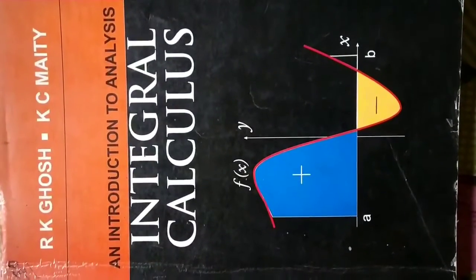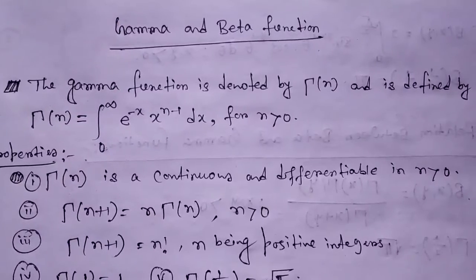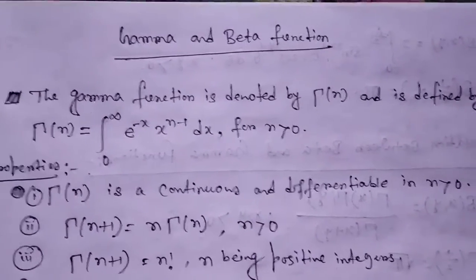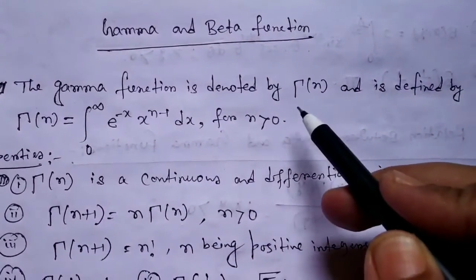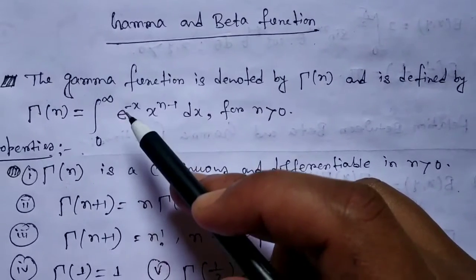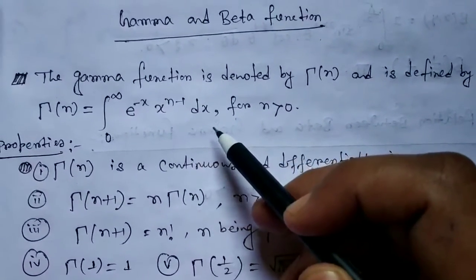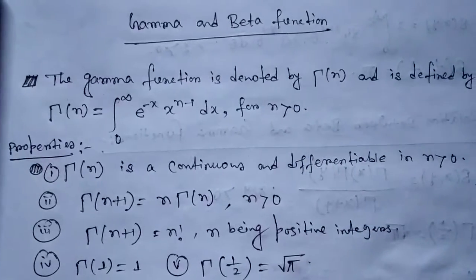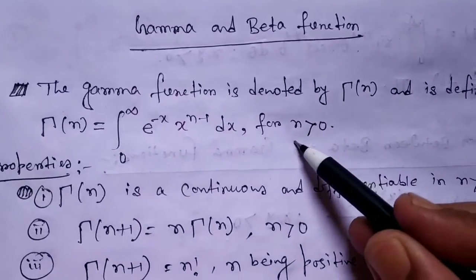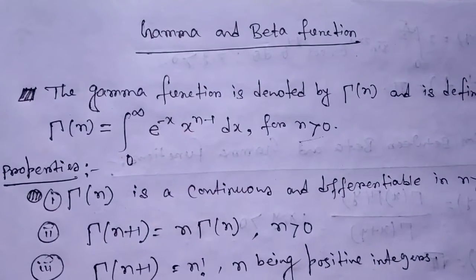Hello students. Now I am discussing Beta and Gamma functions from integral calculus. Firstly, let us define the Gamma function. The Gamma function is denoted by Γ(n) and is defined by Γ(n) = integration from 0 to infinity of e^(−x) · x^(n−1) dx, where n greater than 0.